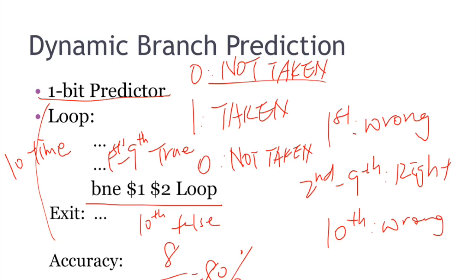Let's compare this to static branch prediction. If we predict the branch not taken, we will be right only for the very last time. So the accuracy will be 1 over 10, which gives us 10% accuracy.